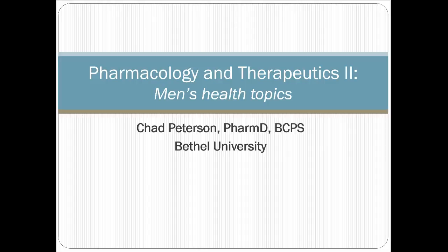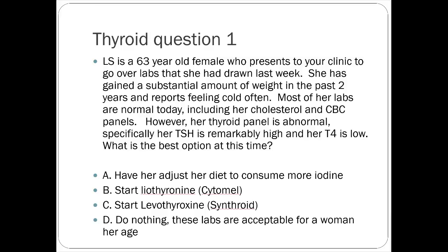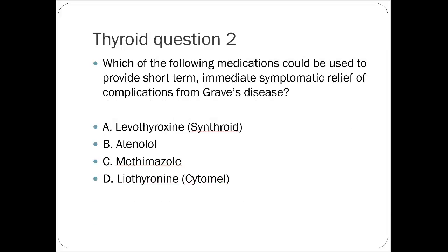Quick thyroid review questions: For a 63-year-old female with weight gain, cold intolerance, high TSH, and low T4, the answer is levothyroxine (C). For short-term immediate symptomatic relief from Graves' disease, the answer is atenolol (B) — a beta blocker. Remember, methimazole would be a more intermediate to long-term solution.